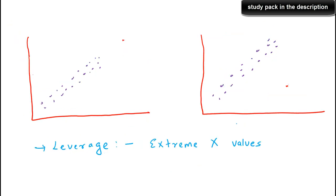Now, what is a high leverage data point or observation? In this example, you can see that most of the observations are following the trend, and the red point also follows the same trend — it is very much within the trend. So there is nothing wrong with this data point; it is not an outlier.